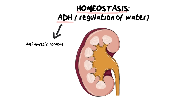The word diuretic refers to urination. So if it's antidiuretic, it means it's going to cause you to urinate less. And its target organ is the kidney, specifically the nephrons within the kidney.